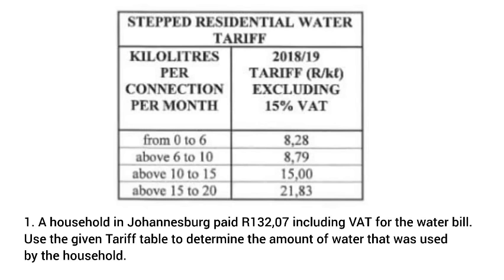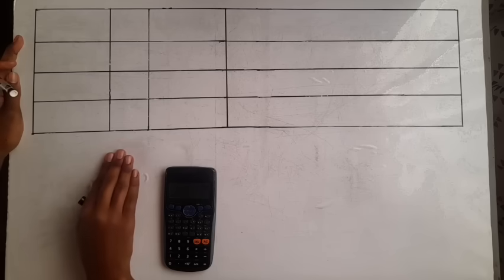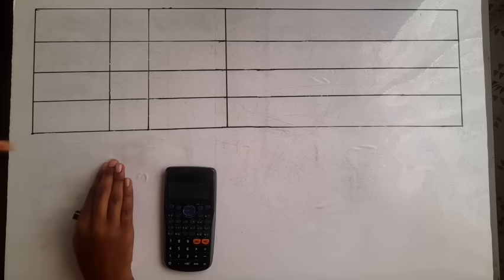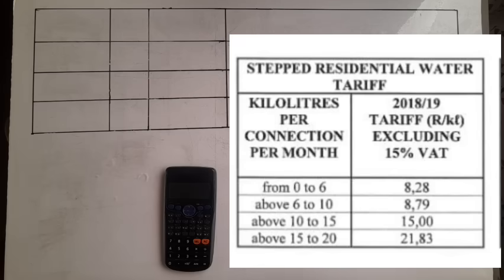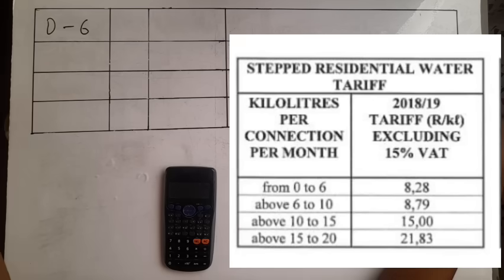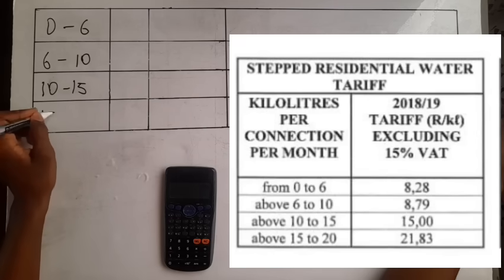The question says a household in Johannesburg paid R132.07 including VAT — use the tariff table to determine the amount of water used. We are going to copy the information from the table. Block 1 is from 0 to 6 kilolitres, Block 2 is 6 to 10, Block 3 is 10 to 15, and Block 4 is 15 to 20.